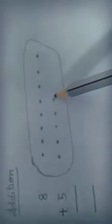Now addition — addition means we want to count all the dots. One, two, three, four, five, six, seven, eight, nine, ten, eleven, twelve, thirteen. How many? Thirteen.